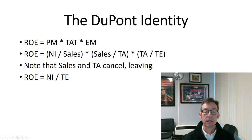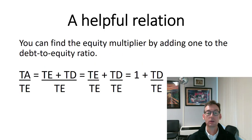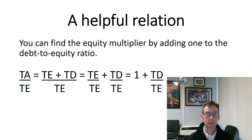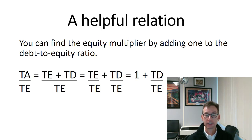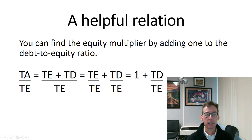Note that sales and total assets cancel, which just leaves you with ROE equal to net income divided by total equity. A helpful relation: sometimes you are given the debt-to-equity ratio, and you need to add one to that to get the equity multiplier. That equity multiplier is what is used in the DuPont identity to calculate ROE. So if your professor didn't give you the equity multiplier and only gave you debt-to-equity, here's how you handle that.